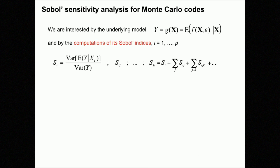Sobol sensitivity analysis. I am interested in formalizing the Sobol indices in the case of this kind of model. My underlying model is G, but I don't have access to G — I don't run G, I run F. G is the expectation of F. I recall here the definition of the first-order Sobol indices, which have been explained before so I won't re-explain them.